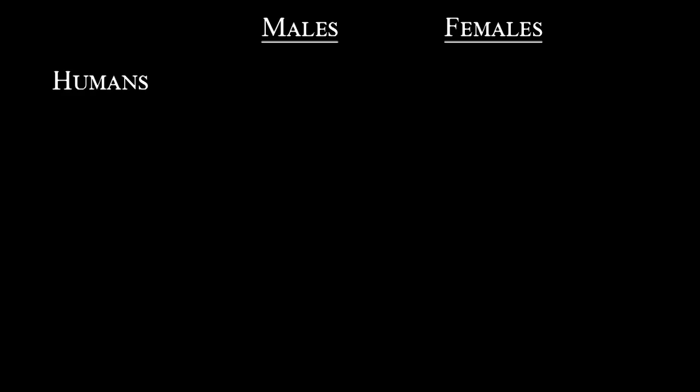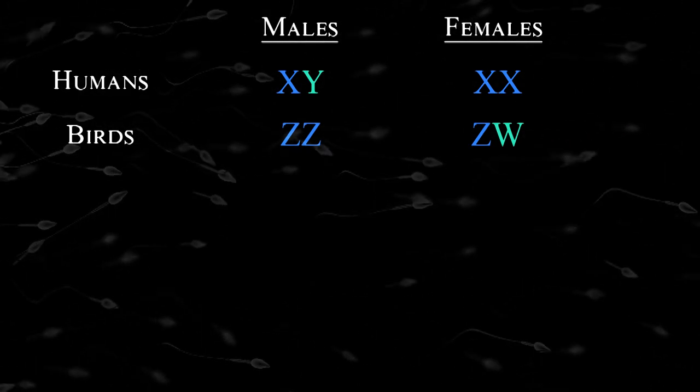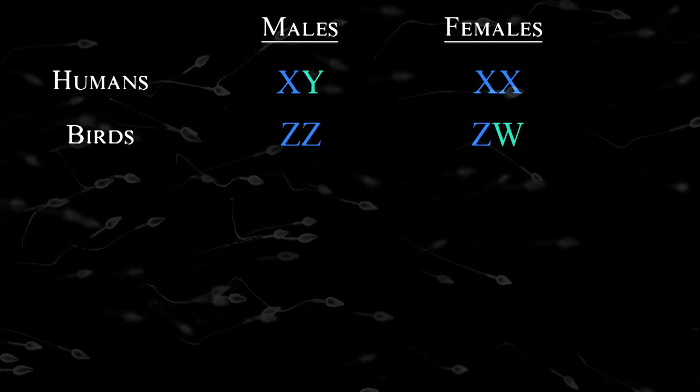For humans, sex is based on chromosomes. Males have XY chromosomes. Females have XX. But this is not the only way to do it. For birds, males have ZZ chromosomes. Females have ZW. And it's not really about chromosomes. What it means to be biologically male is that you produce many small gametes.